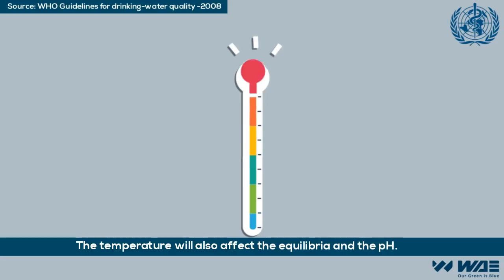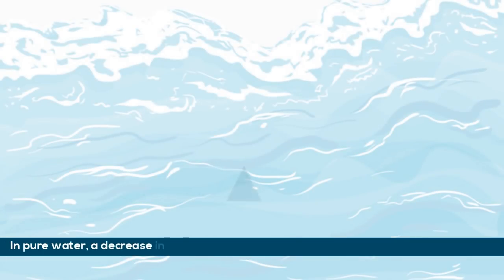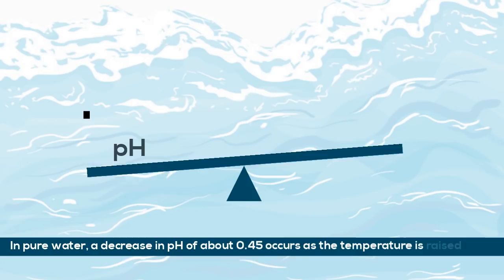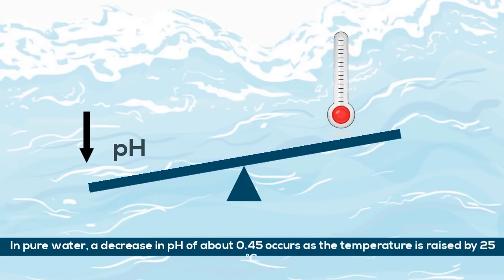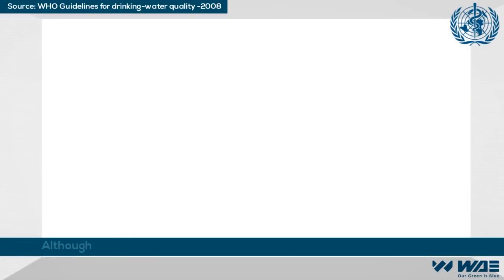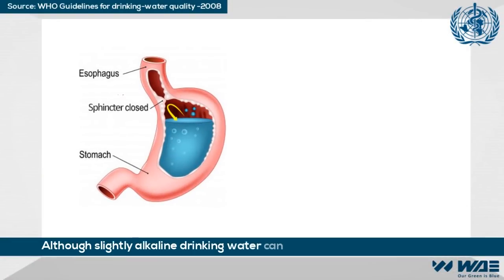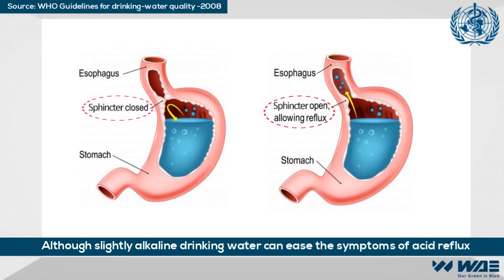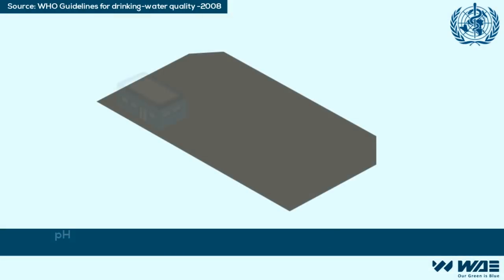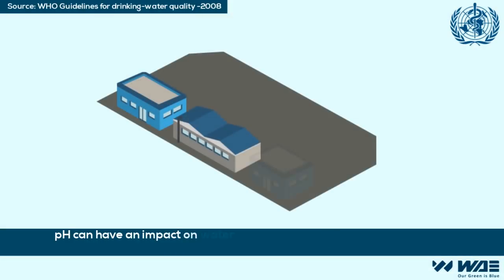In pure water, a decrease in pH of about 0.45 occurs as the temperature is raised by 25 degrees Celsius. Although slightly alkaline drinking water can ease the symptoms of acid reflux, pH can have an impact on water treatment.